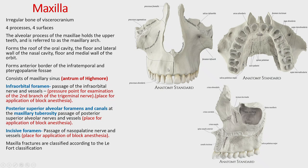The maxilla also has four surfaces: the anterior surface (ventral part); the orbital surface, mainly forming the floor of the orbit and partly the medial wall; the nasal surface, facing the nasal cavity; and the infratemporal surface, facing the infratemporal fossa — a very important deep region of the head. So the key processes are frontal, alveolar, zygomatic, and palatine; and the surfaces are anterior, orbital, nasal, and infratemporal.